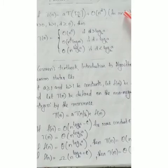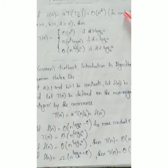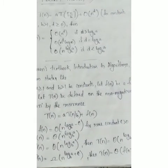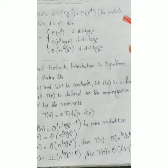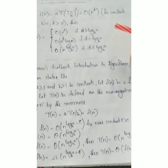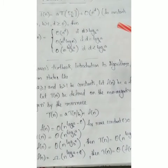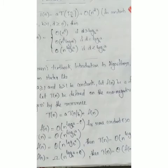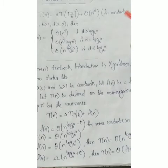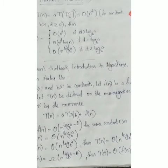If f of n is asymptotically equal to n raised to log a to the base b, then T of n equals Theta of n raised to log a to the base b times log n. If f of n is Omega of n raised to log a to the base b plus epsilon, then T of n equals Theta of f of n.